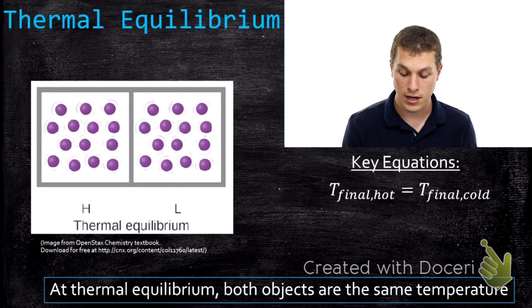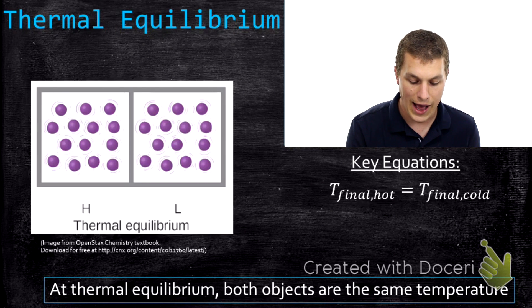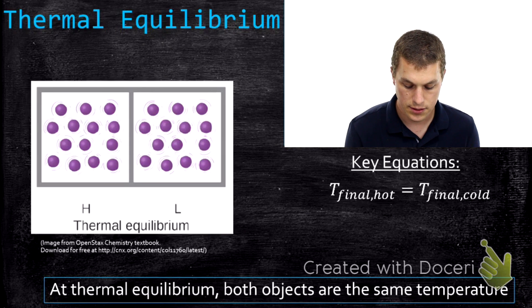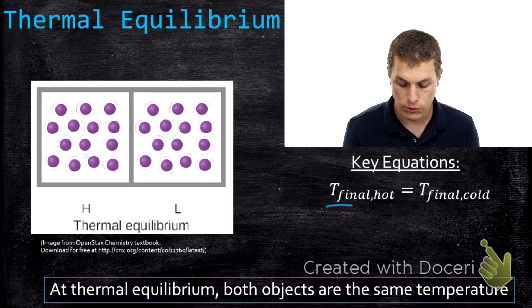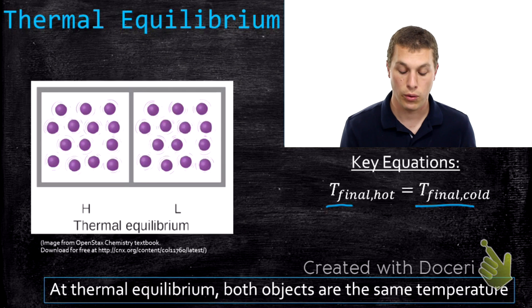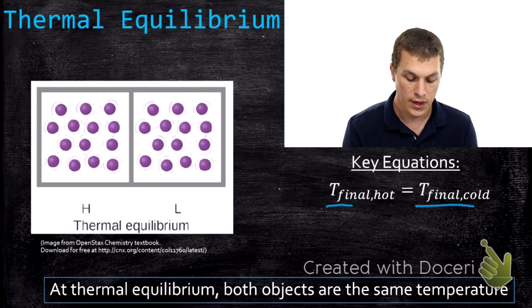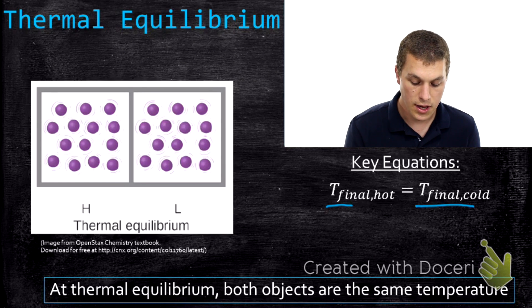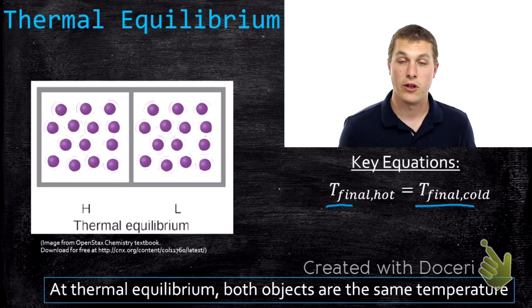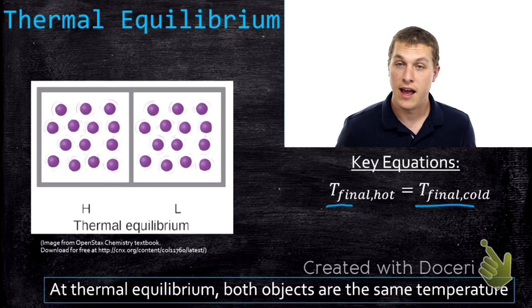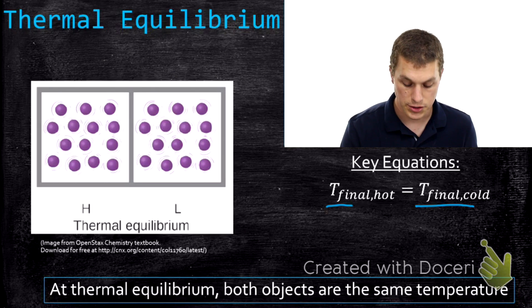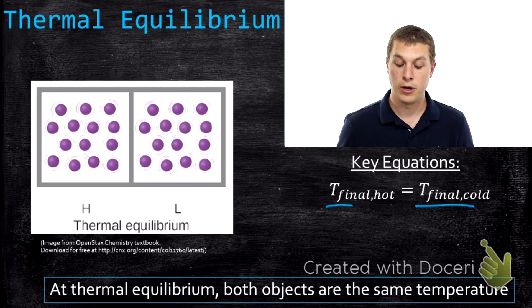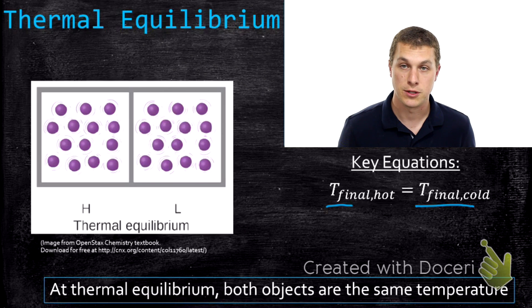We can express that mathematically by saying the final temperature of the hot object is equal to the final temperature of the cold object. We can see in our picture that now those molecules are the same colors and they're going to be vibrating at about the same rate — meaning they've reached the same temperature. So at thermal equilibrium, both objects are the same temperature.